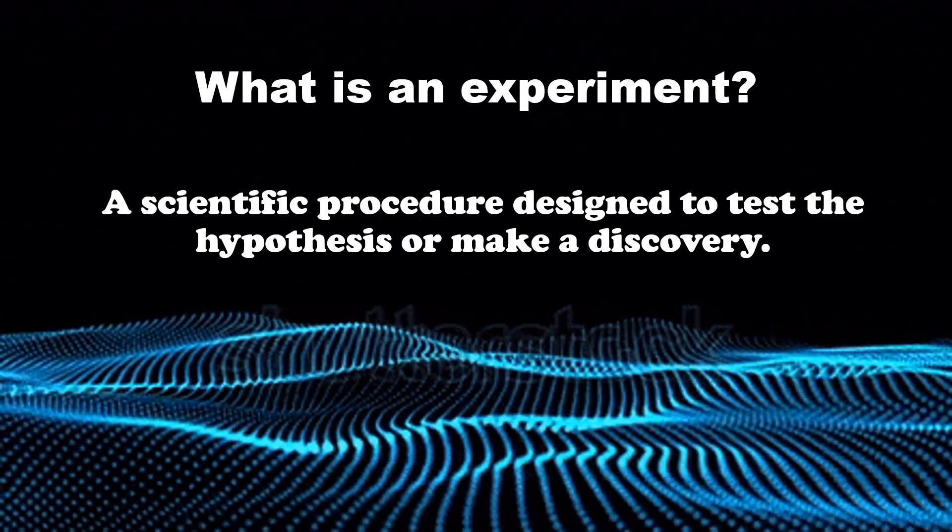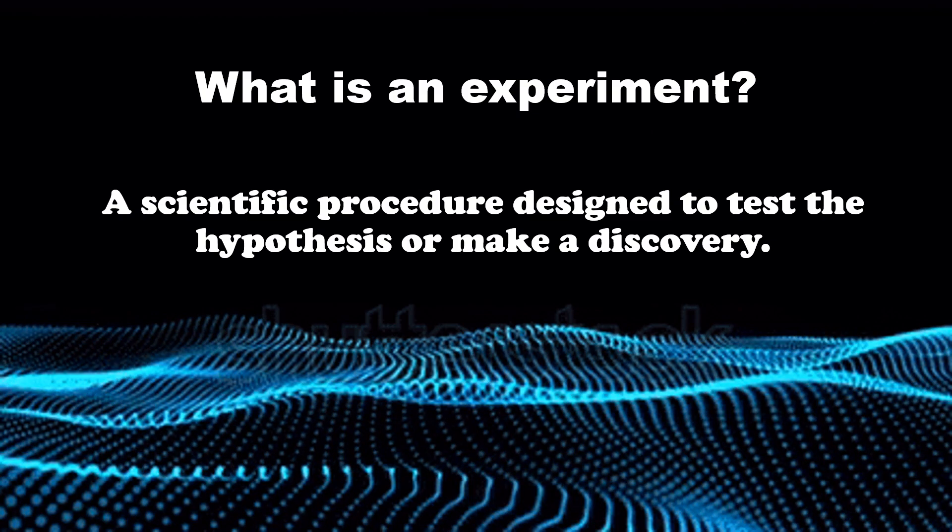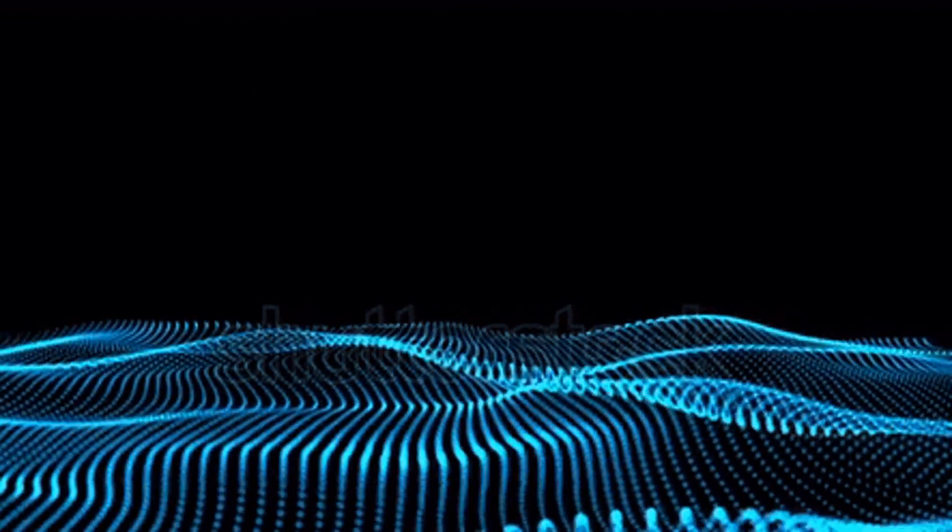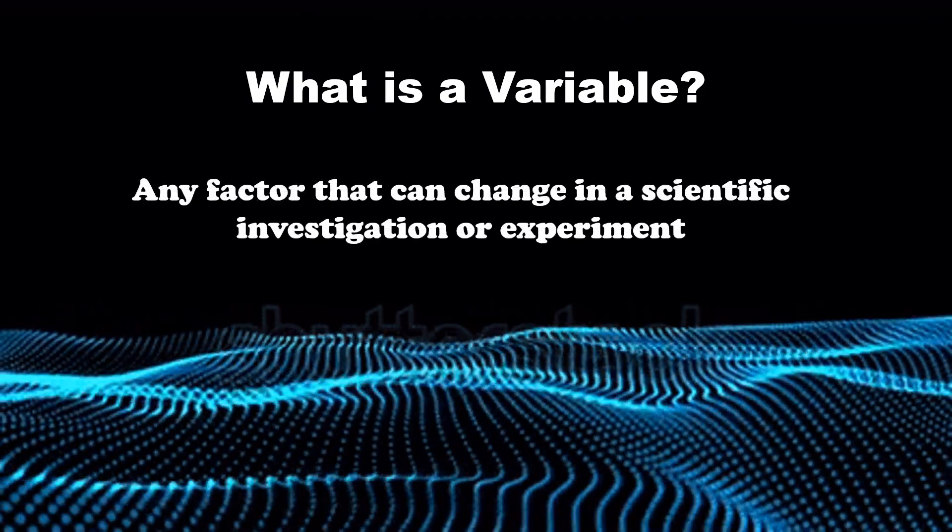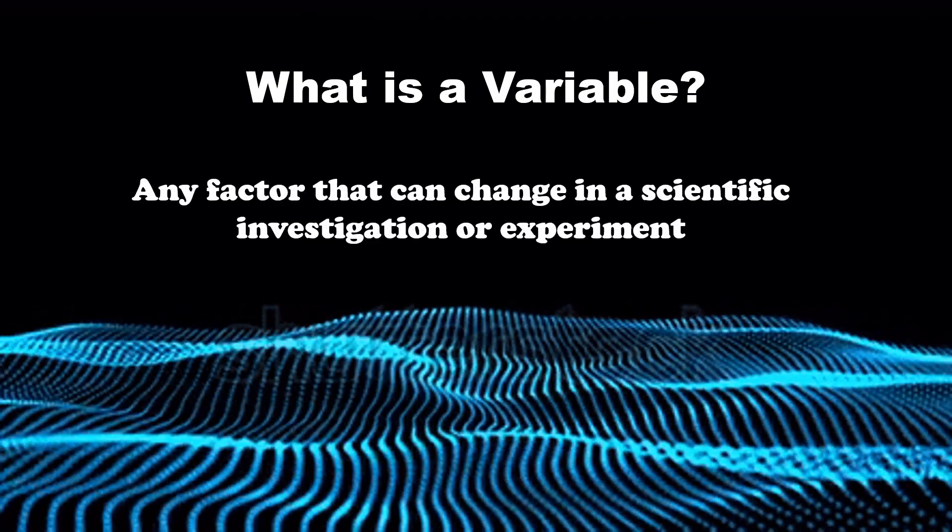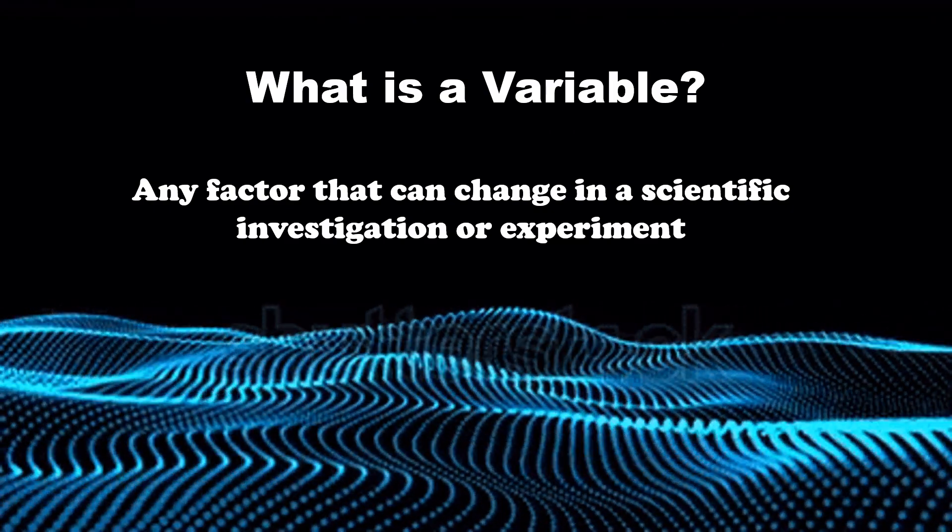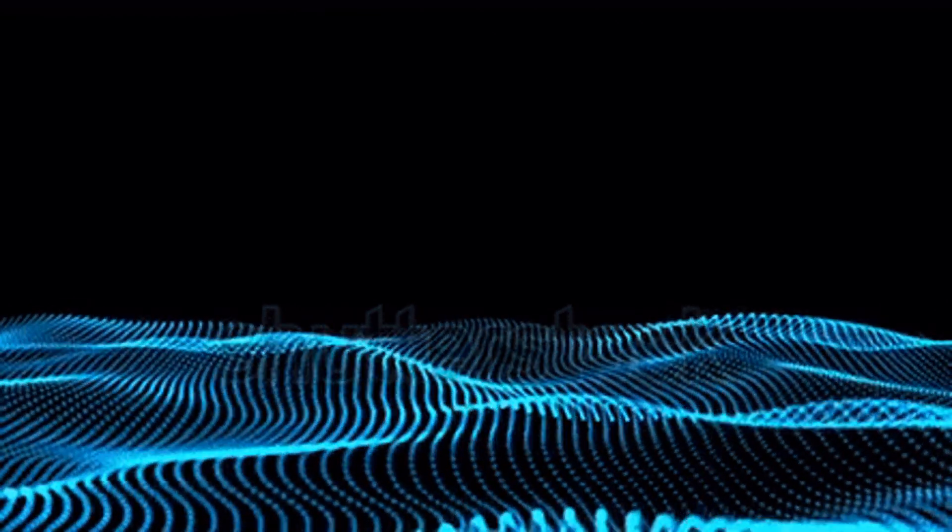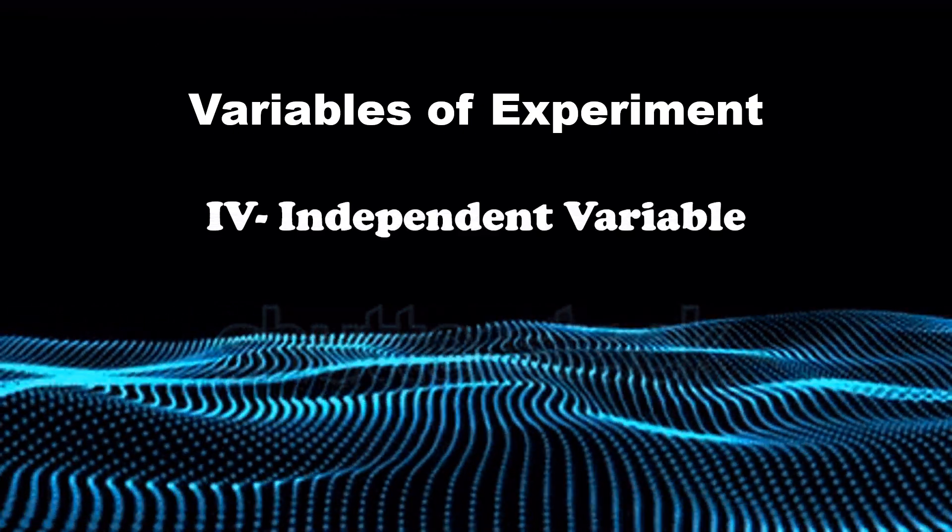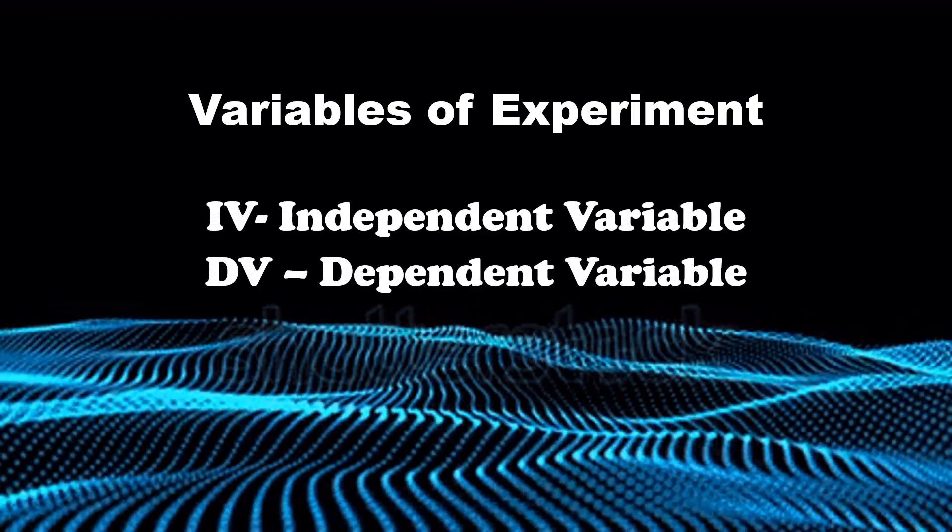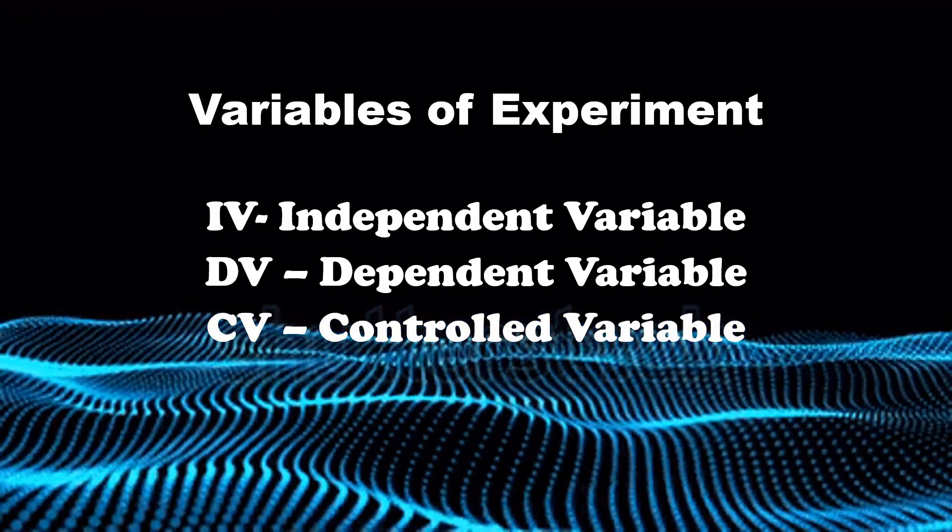In doing an experiment, there are things to be considered. Those things are called variables. What is a variable? A variable is any factor that can change in a scientific investigation or experiment. In our discussion today, we will talk about the three variables of experiment. These are the independent variable or IV, the dependent variable or DV, and controlled variable or CV.